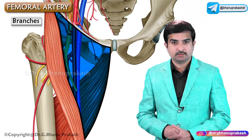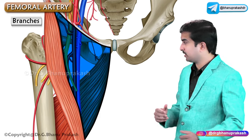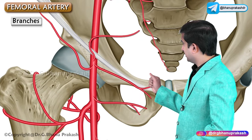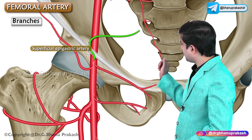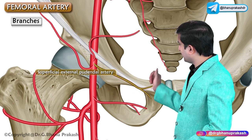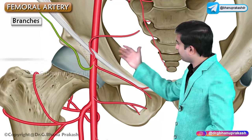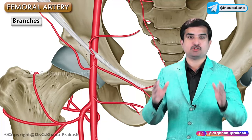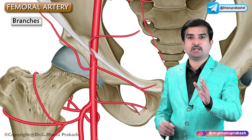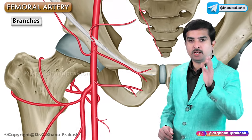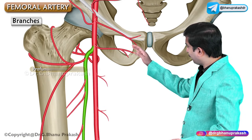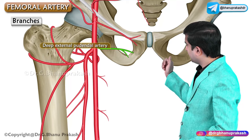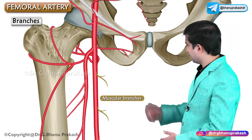In the femoral triangle, the artery gives off three superficial branches: the superficial epigastric artery, the superficial external pudendal artery, and the superficial circumflex iliac artery. There are also three deep branches: the profunda femoris artery, the deep external pudendal artery, and the muscular branches.